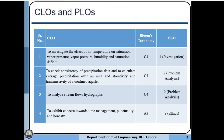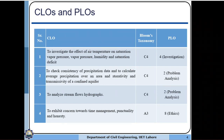Let me go through the CLOs, corresponding PLOs, and Bloom's Taxonomy Levels. CLO 1 is to investigate the effect of air temperature on saturation vapor pressure, humidity, and saturation deficit. Design job one will contribute toward achieving CLO 1. This CLO is linked to PLO 4, which is Investigation, and the taxonomy level is C4 — where C stands for the cognitive domain and 4 is the level.